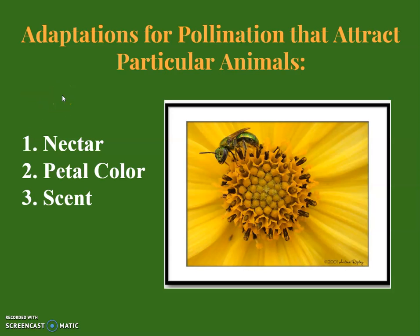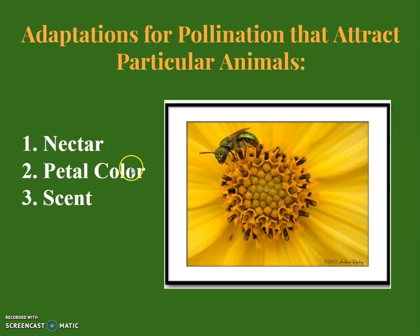There are different adaptations for pollination that attract animals to help with fertilization and pollination. First, plants can produce nectar to attract bugs or birds. The petal color can also attract different organisms to help pollinate, and scent is another feature that helps attract pollinators.